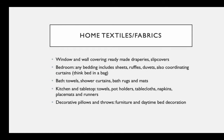For home textiles you have to think about window and wall coverings as well. This includes ready-made draperies, slip covers for windows, and wall coverings like wallpaper made out of cloth. For commercial purposes this also includes awnings for the outside of windows. For bedroom, think bedding again — sheets, ruffles, bed skirts, duvets, and coordinating curtains. Those bed-in-a-bag sets will sometimes include valances or draperies to match the bed set.